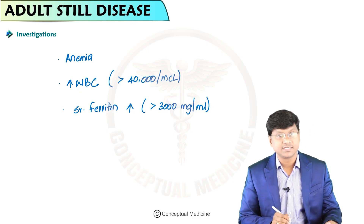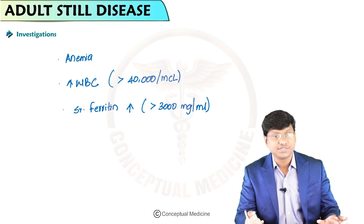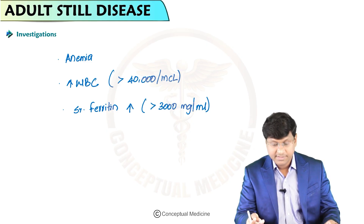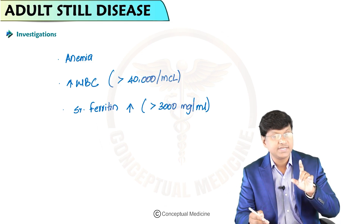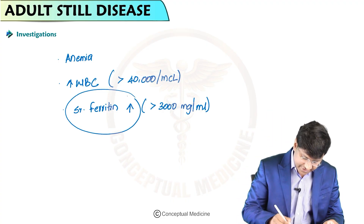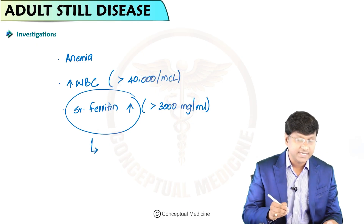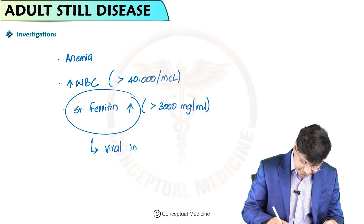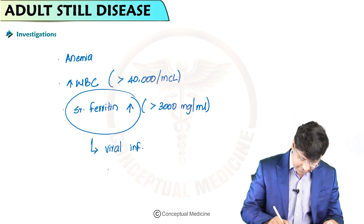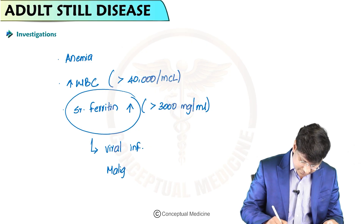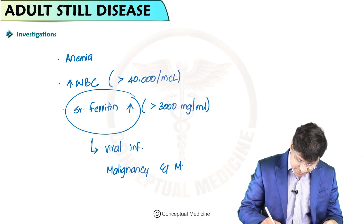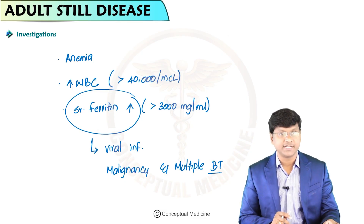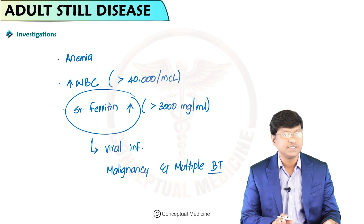Other conditions such as viral infections, malignancy, and multiple blood transfusions can also cause extreme elevation in ferritin levels, so these must be considered in the differential.